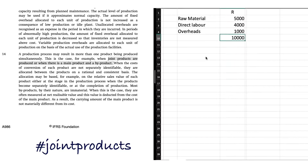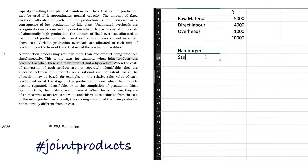So this morning in my butchery I put the mince in — that was 5,000 rand. I paid my employees for operating the machines, 4,000 rand for the day. I incurred 1,000 rand in overheads. At the end of the day the stuff comes out of the machines — we've got the hamburger patties and we've got the sausages. Those are the two things coming out of the machines.